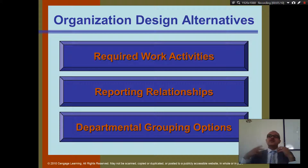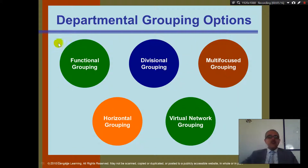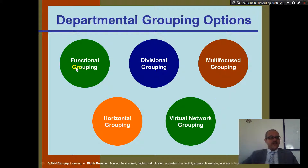That will determine your objective, and depending on your objective, you decide how you design your company. There are five ways to group or design your company: functional, divisional, multifocused, horizontal, and virtual network.